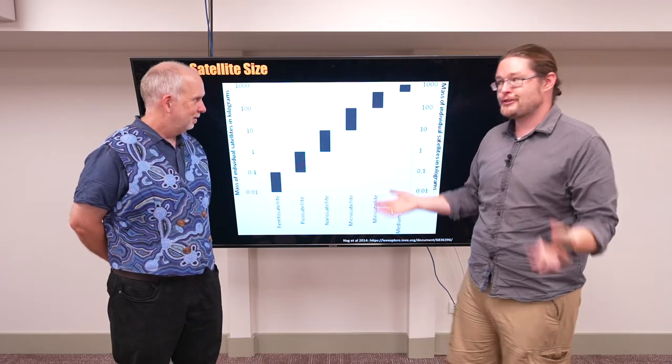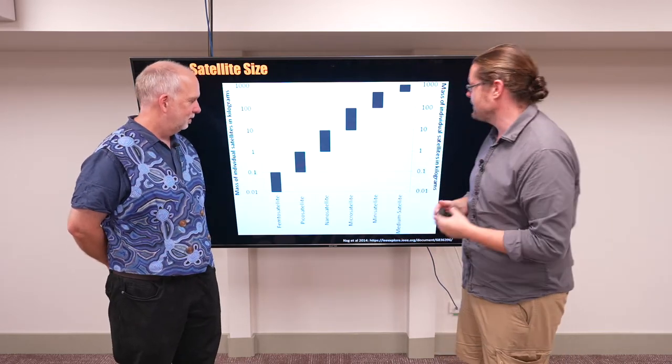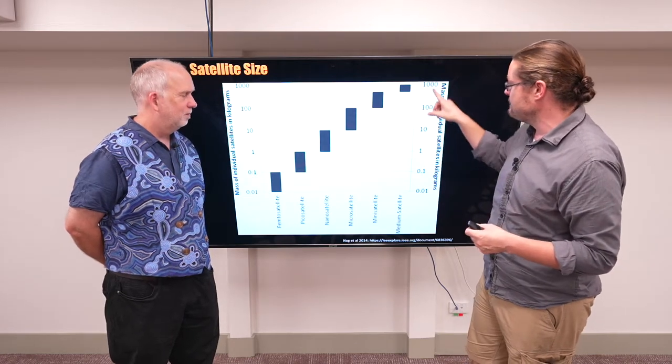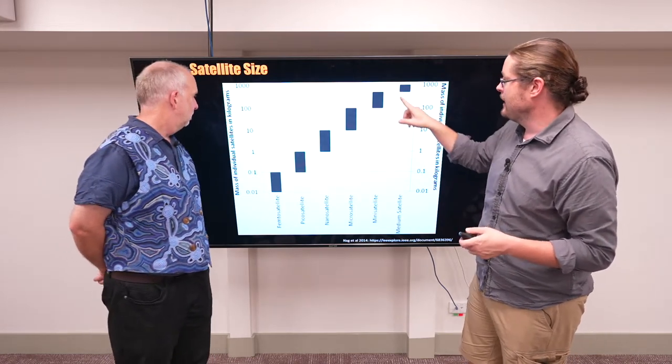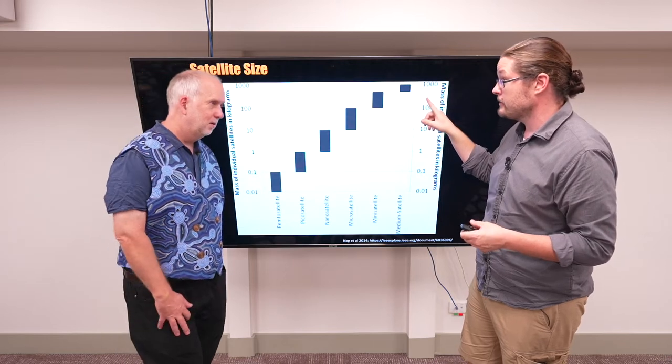Much like you were just saying, there's different types of cars, there's different types of satellites. A lot of people picture up here what we call these medium to large satellites that weigh hundreds to thousands of kilograms, and they do exist.